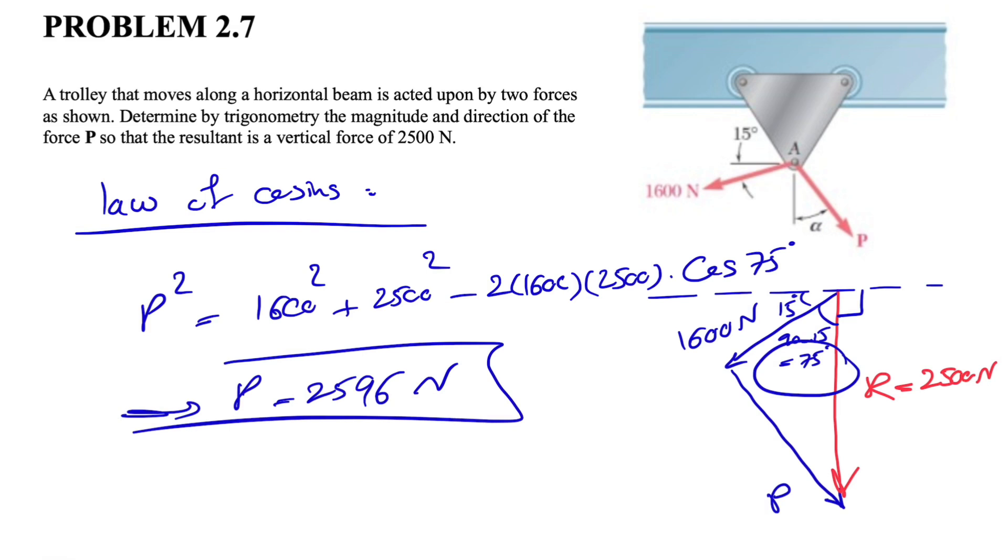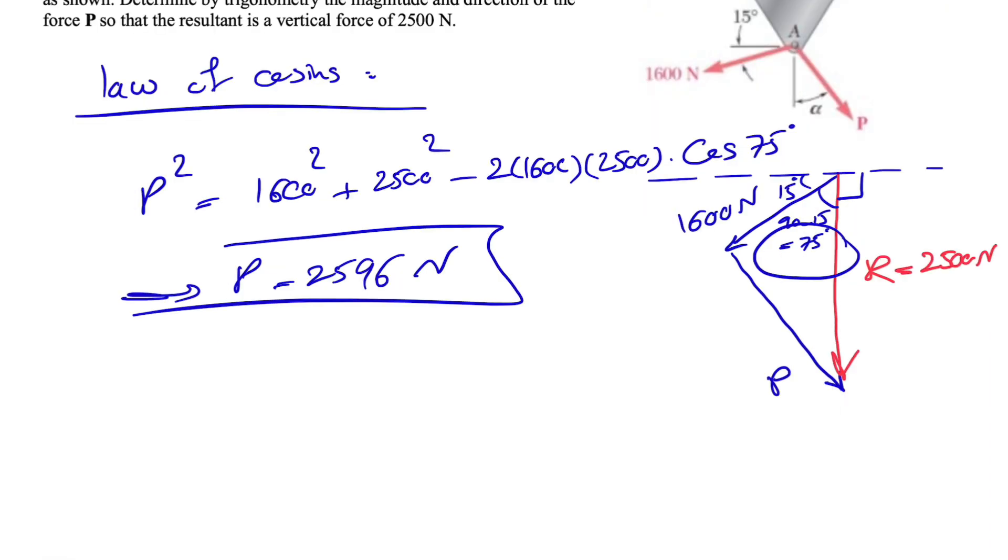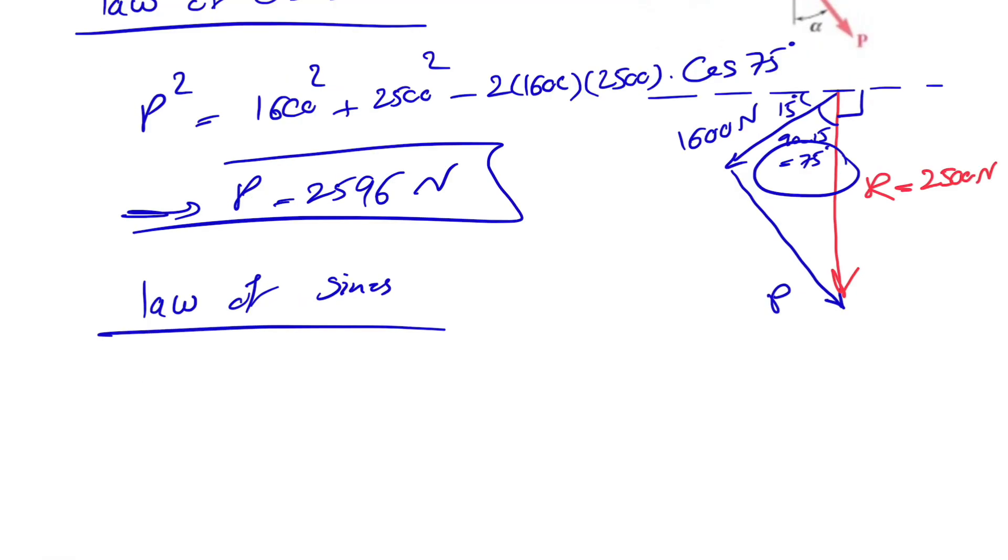If we do the law of sines, we can find this angle, let's call it alpha. So we will have 1600 divided by sine of alpha equals P over sine of 75 degrees. From here we found P, we know P was 2596.